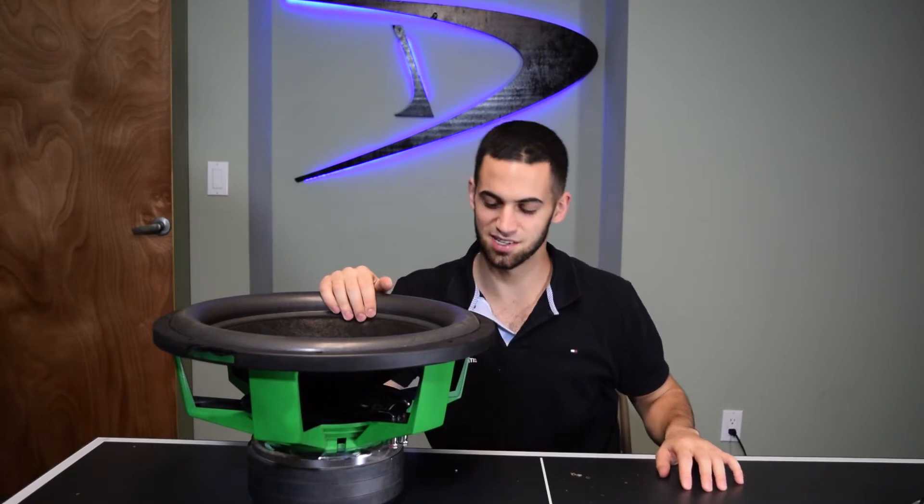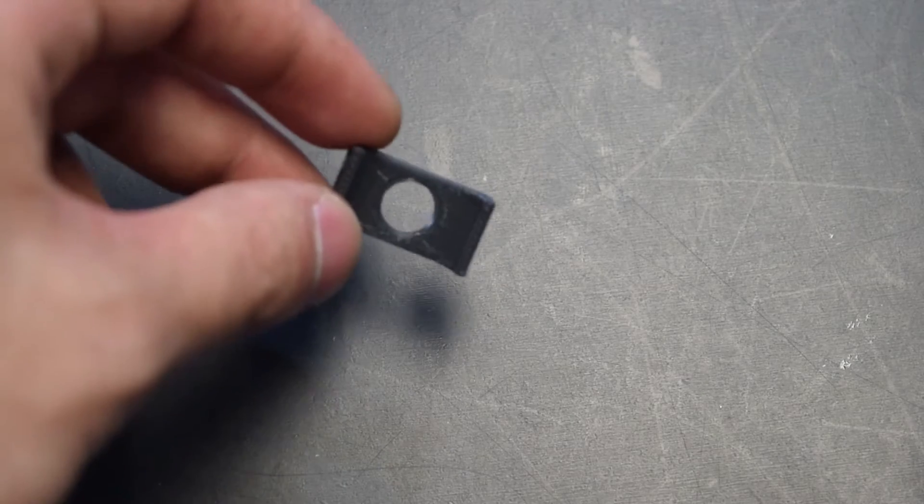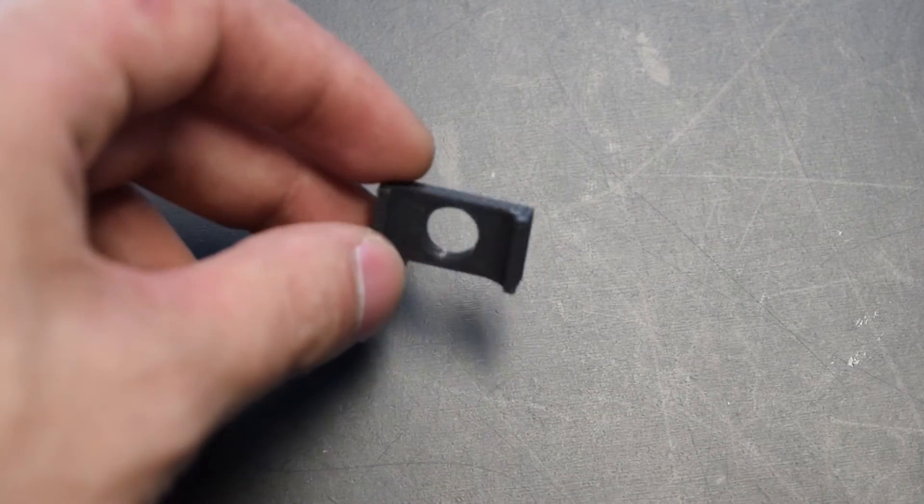Before you begin the installation, be sure to identify where your vent gaps are in your subwoofer. For this DCXL18, we're going to use the straight bracket.